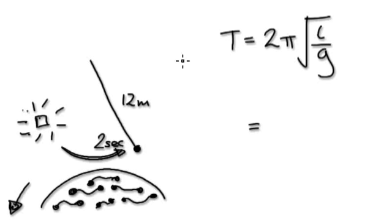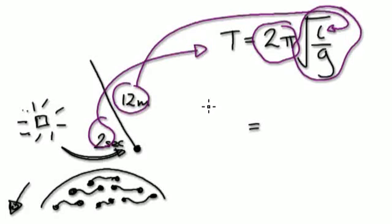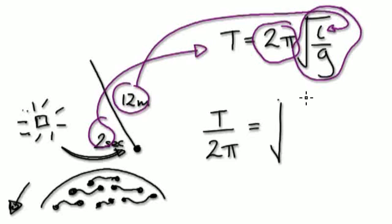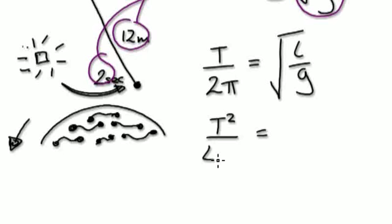Leave the substitution in at the end — don't substitute these in yet, let's leave it to the end. Visualize this as one bubble multiplying this bubble here. Divide both sides by 2 pi, so T over 2 pi on one side, and root L over G on the other. Now square both sides, so this would be T squared over 4 pi squared, and on the right hand side it would be L over G.